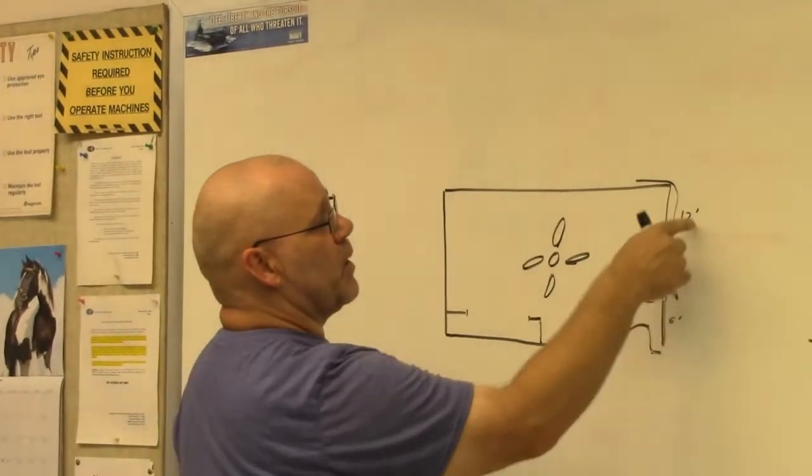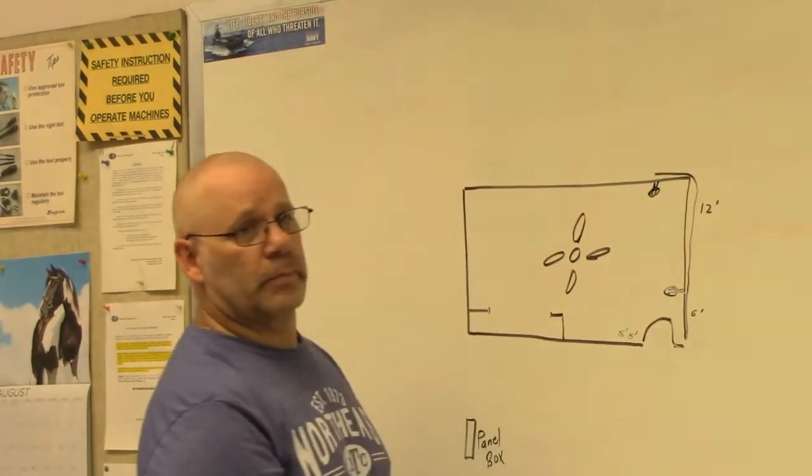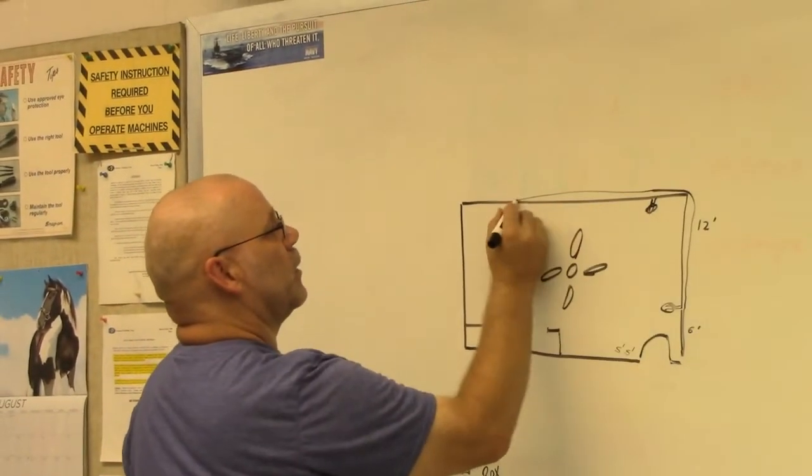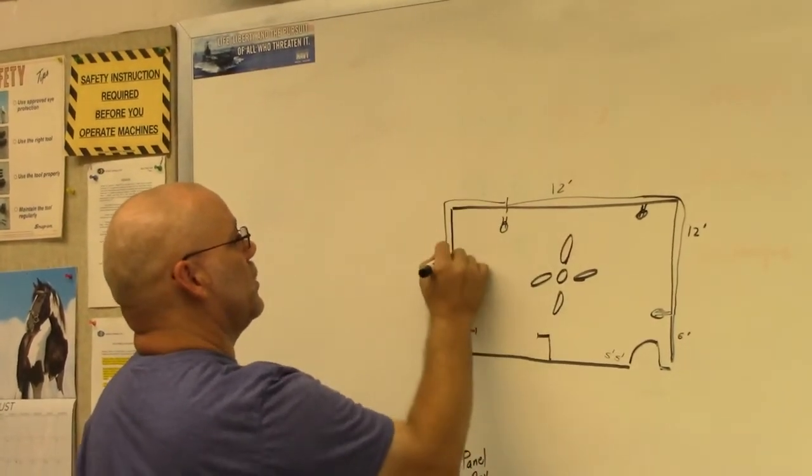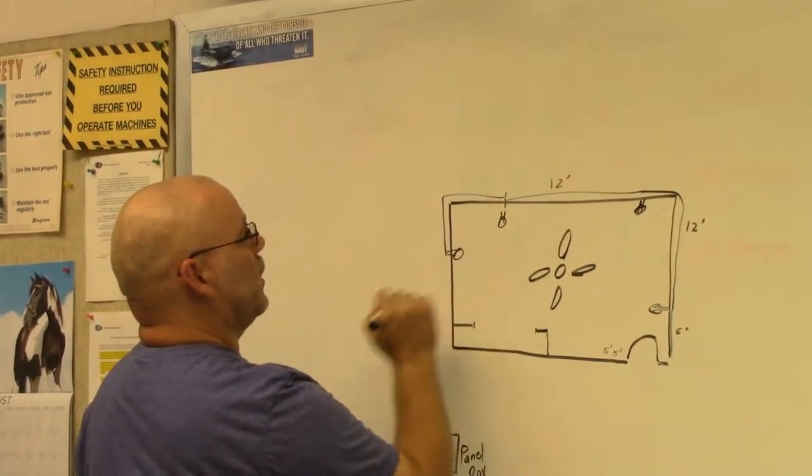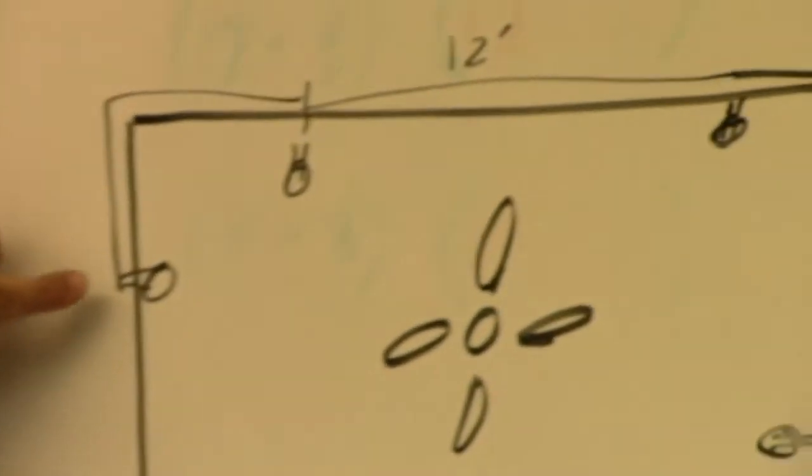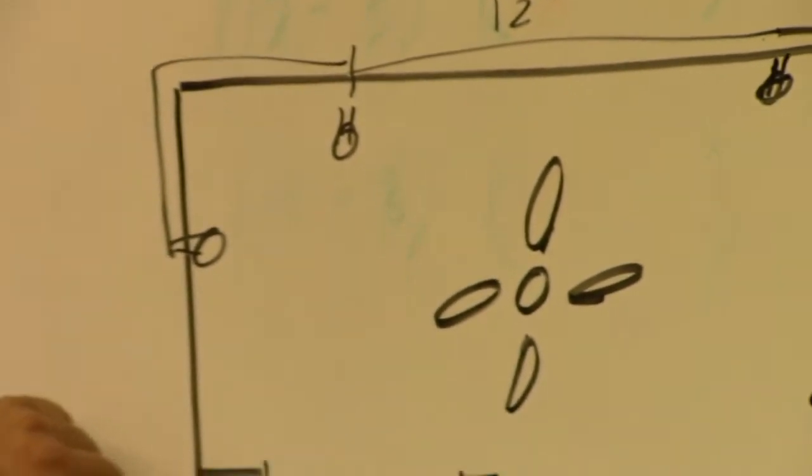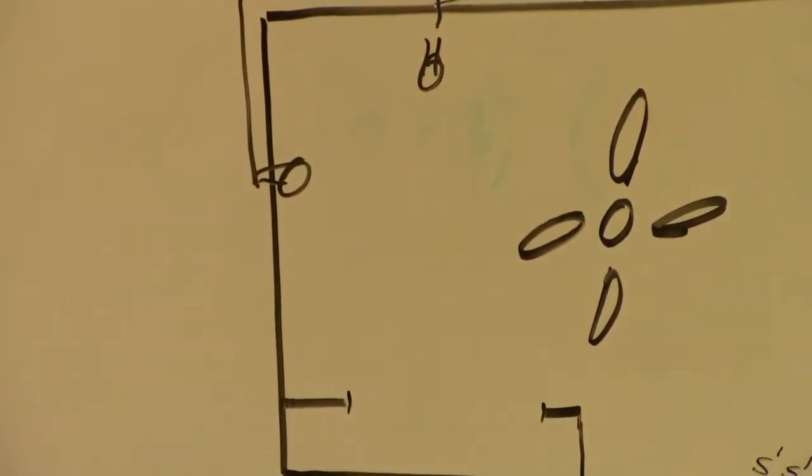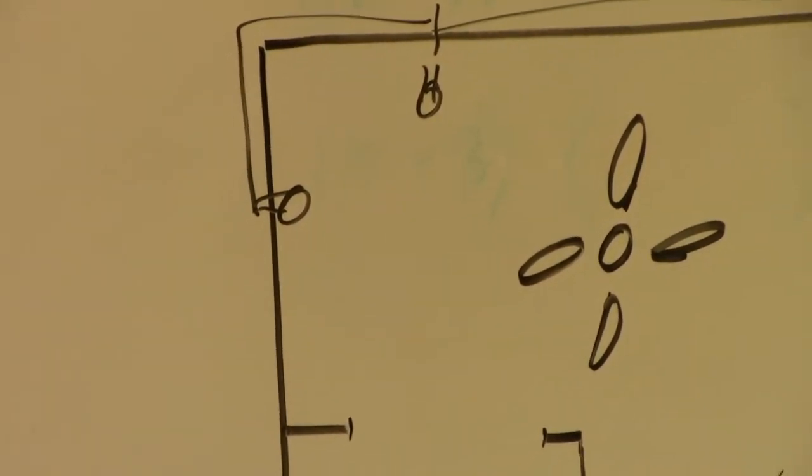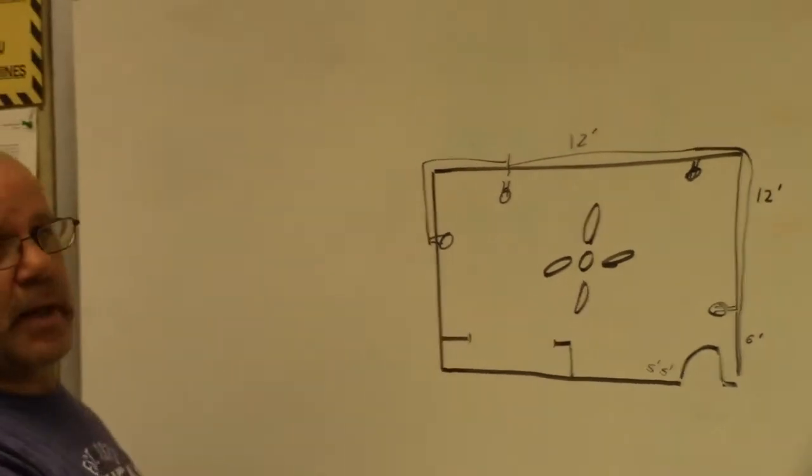So I'm going to measure up to 12 feet and put the outlet symbol. Measure 12 more feet, outlet symbol, 12 feet, outlet symbol. Now if this distance is more than six feet, I have to add another outlet. If it's six feet or under, I'm good. So I'm going to say that this is less than six feet.